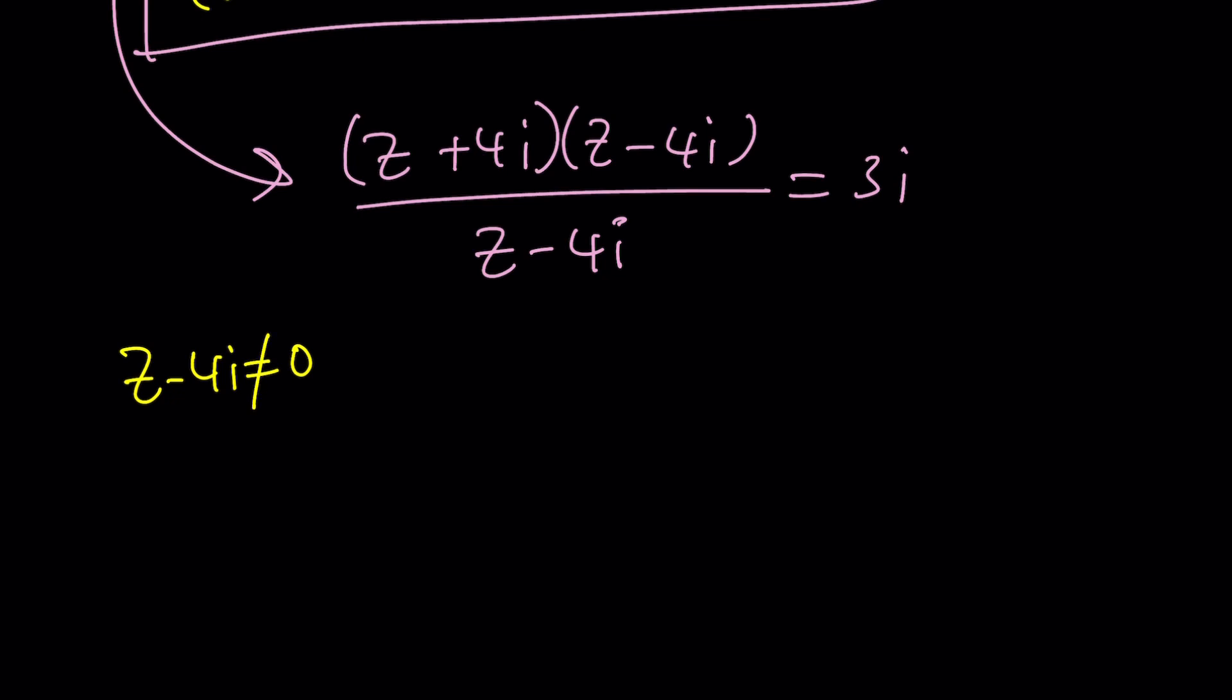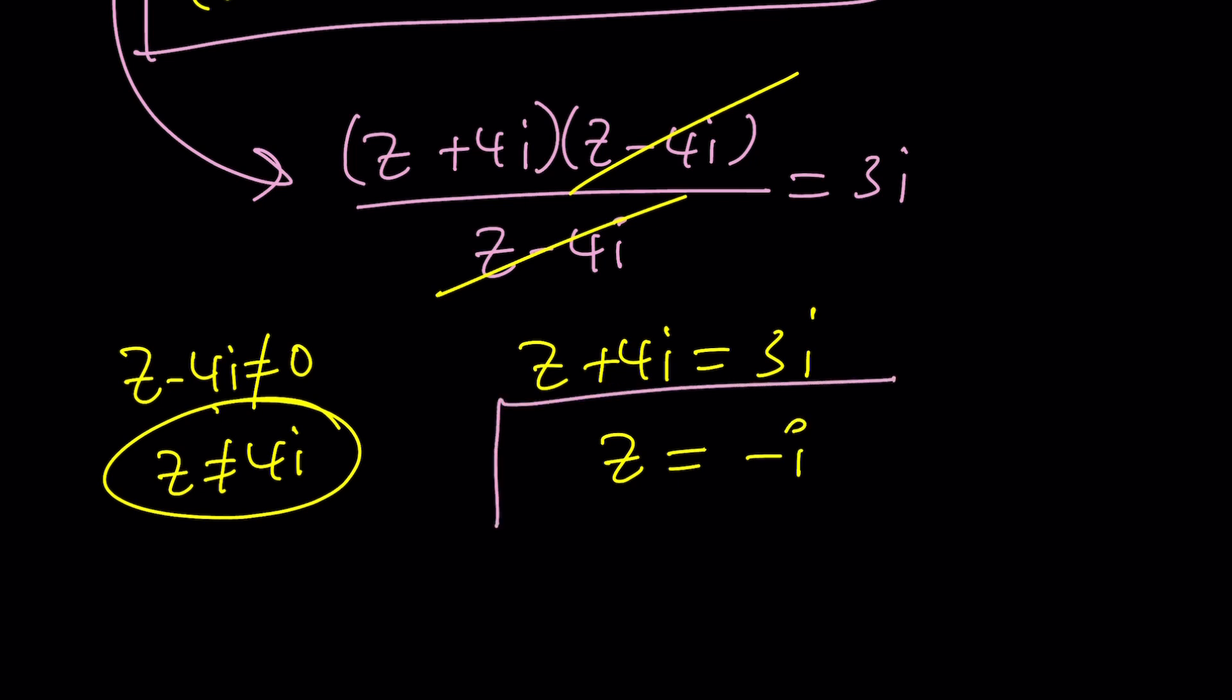Uh-oh, that reminded me something. Let's go ahead and cancel it out. We get z plus 4i equals 3i. Uh-oh, this is linear and easy to solve. z equals negative i. Wait a minute. Weren't you supposed to get two solutions? Because we did get two solutions with the first method. Hmm. Let's go ahead and check it out. We got negative i and 4i.